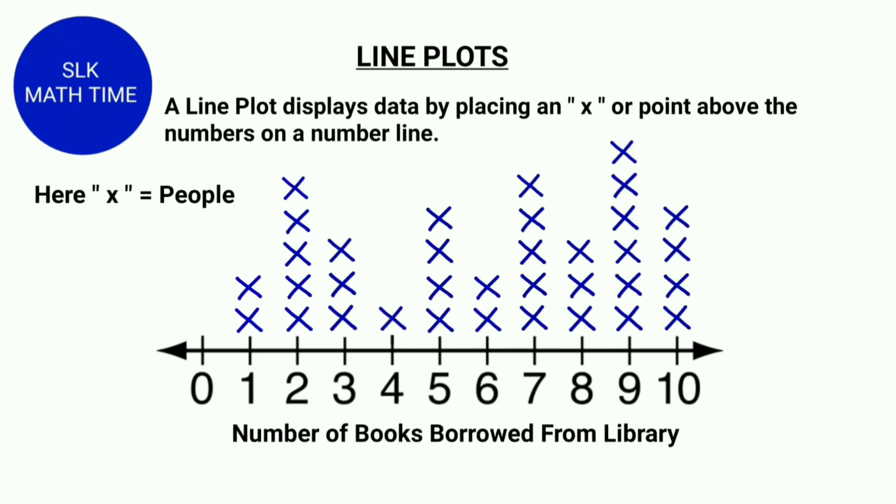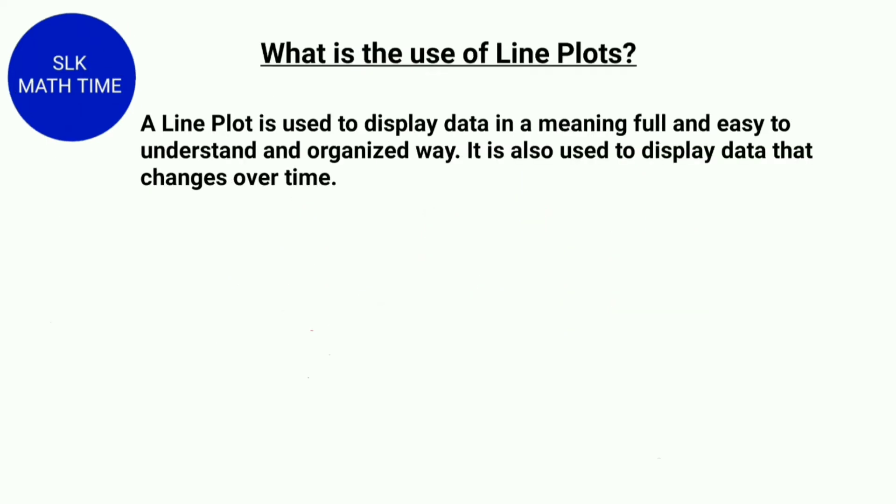One person may borrow seven books from the library. Then after a few minutes another person might borrow four books from the library. So as you see over time the number of books that people borrow changes. So that's what they are saying over here.